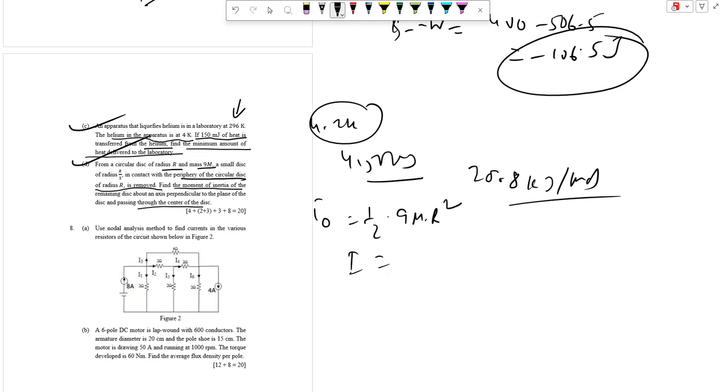The moment of inertia is I equal to I₀ minus I small, this value that is half 9M R square minus half M small R square. You can take half common, 8M R square.